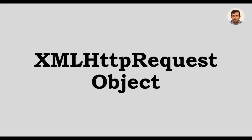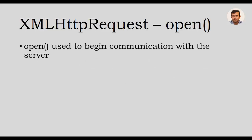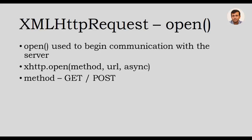This video tutorial covers the XMLHttpRequest object of the Ajax API. The XMLHttpRequest object contains an open method, which is used to begin the communication with the server. The prototype of the open method contains three arguments. The first argument is the method, which can be GET or POST.